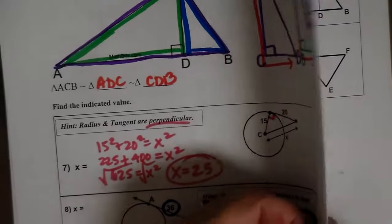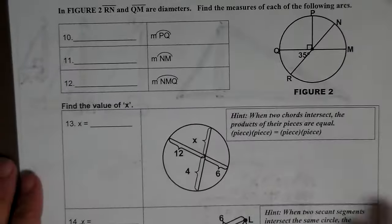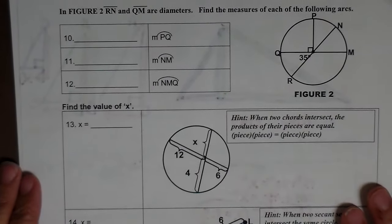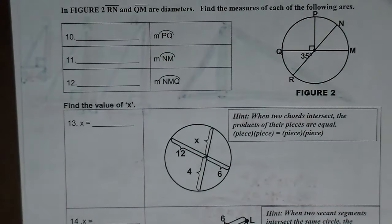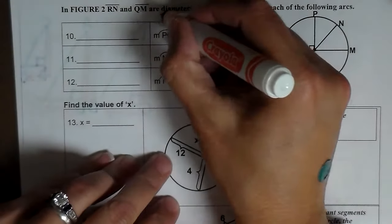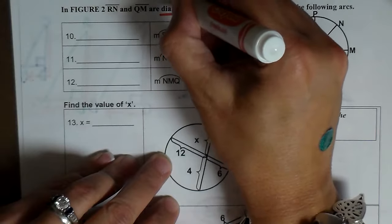Okay. Now let's go to some of the other circle stuff. Alright. When you're looking at the circles, right here it says, RN and QM are diameters. Why does it tell us that? When it tells us that they are diameters, we know that we've got semicircles.